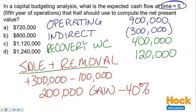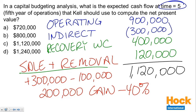So we've got four cash flows in year five: $900,000 operating after-tax, minus $300,000 indirect costs after-tax, plus $400,000 recovery of working capital, plus $120,000 net from the sale and removal of equipment. Adding all of this together, the cash flow in year five is $1,120,000. This is a standard capital budgeting question covering the initial investment, operations with the tax depreciation shield during the project life, and the terminal cash flows from selling equipment and recovering working capital.